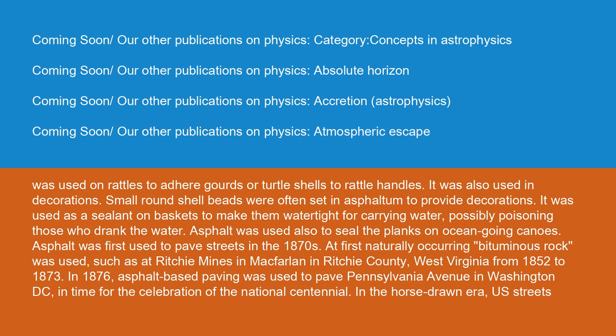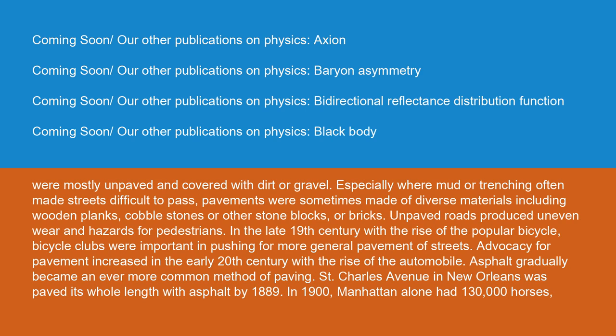Asphalt was first used to pave streets in the 1870s. At first, naturally occurring bituminous rock was used, such as at Ritchie Mines in Ritchie County, West Virginia from 1852 to 1873. In 1876, asphalt-based paving was used to pave Pennsylvania Avenue in Washington, D.C. in time for the celebration of the National Centennial. In the horse-drawn era, U.S. streets were mostly unpaved and covered with dirt or gravel. Pavements were sometimes made of diverse materials including wooden planks, cobblestones, or other stone blocks or bricks. In the late 19th century, with the rise of the popular bicycle, bicycle clubs were important in pushing for more general pavement of streets. Advocacy for pavement increased in the early 20th century with the rise of the automobile, and asphalt gradually became an ever more common method of paving.